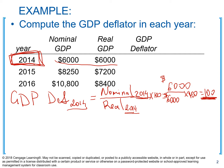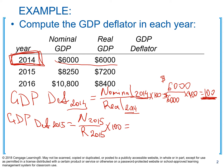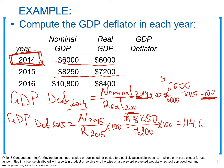Next we calculate GDP deflator for year 2015. The formula is nominal GDP for 2015 divided by real GDP for 2015, multiplied by 100. Using the numbers we calculated previously: 8,250 divided by 7,200, multiplied by 100. This gives us 114.6.